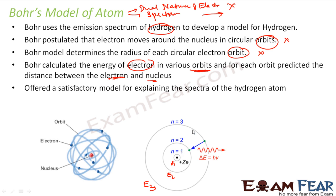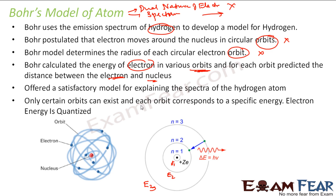He offered a satisfactory explanation for the spectra of hydrogen. He told that only certain orbits can exist, and each orbit corresponds to a specific energy — energy is quantized. The electrons move in orbits n = 1, 2, 3 and so on. This is a very basic explanation but actually it is not this way. The actual explanation is the quantum model of atom which we will discuss later, but just now understand the work which is done by Bohr.